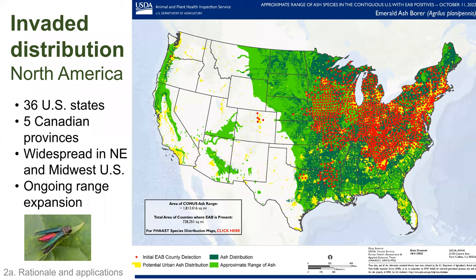The invaded distribution of emerald ash borer in North America is extensive. It also occurs in five Canadian provinces. This map was produced on October 11th of 2022 — red circles indicate EAB county detections. It's present in 36 U.S. states, most widespread in the Midwest and Northeast, with ongoing range expansion into the South. Some detection records in Texas and Louisiana are relatively new. It's also present in the Boulder and Fort Collins area of Colorado, continuing to spread westward, and has now been detected in the Forest Grove area of Oregon.